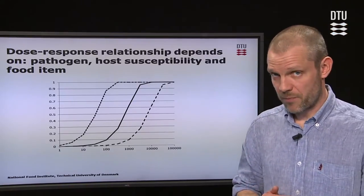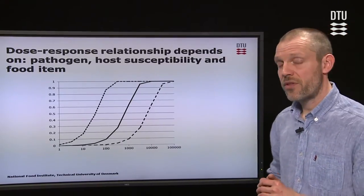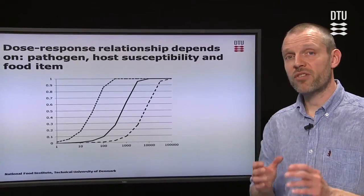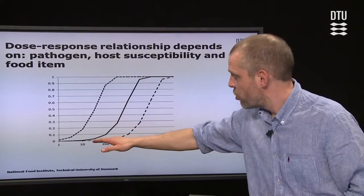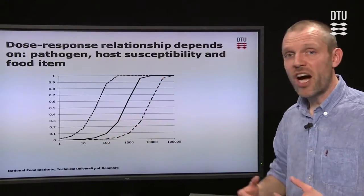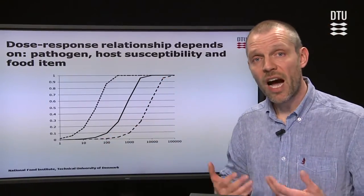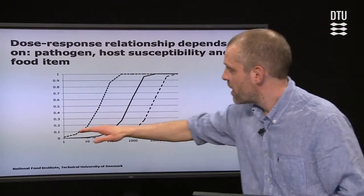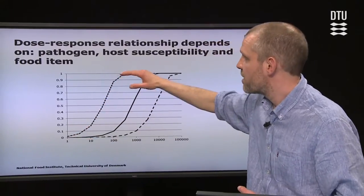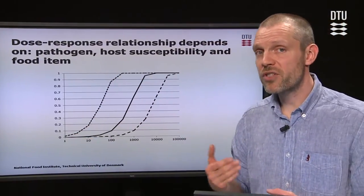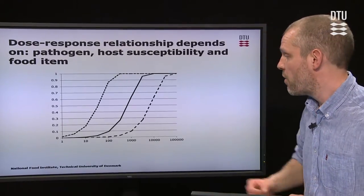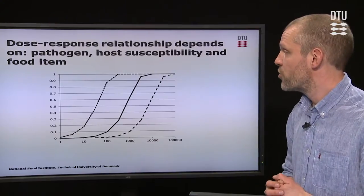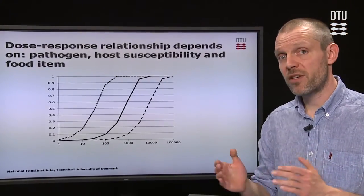But also the host susceptibility matters. If we look at this picture and think that we have the same pathogen but different hosts, then the curve out here can represent young, healthy, strong people with a strong immune system, whereas the curve down here can represent very susceptible people like old people or chronically sick people, and the middle group can represent average-age people. So the host susceptibility also varies.